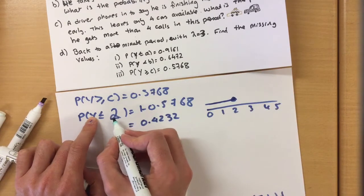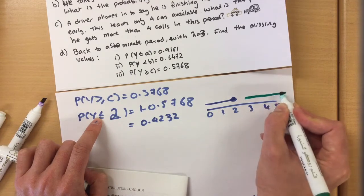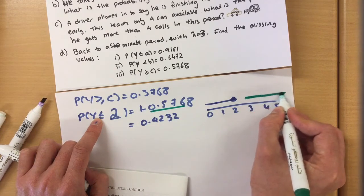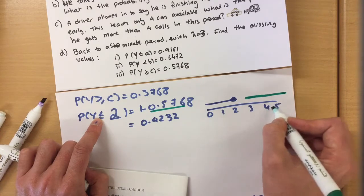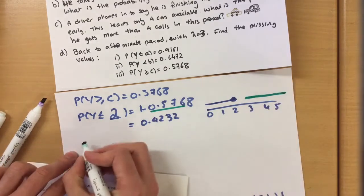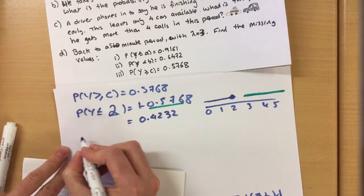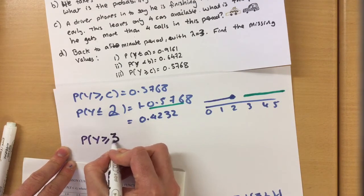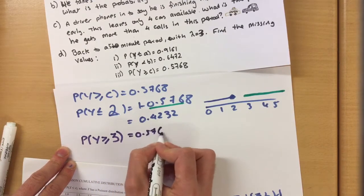So our 1 minus would give us this side, so this probability here refers to this side of the line, which means everything equals 3, 4, 5, 6, etc. So our probability is Y is bigger than or equal to 3 equals 0.5768.